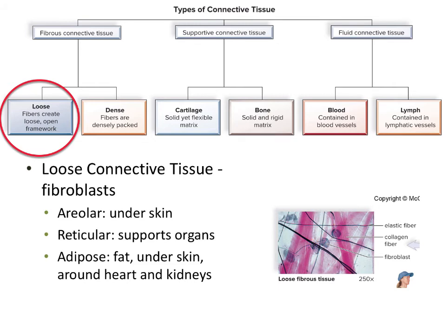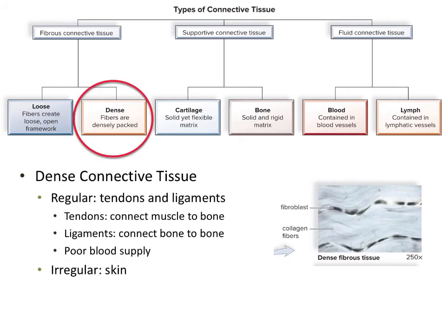In contrast, dense connective tissue does not have a lot of open space. There are a lot of collagen fibers, which gives it a lot of strength but not as much stretchiness or elasticity. You're going to find these in your tendons and ligaments — tendons connect muscles to bones and ligaments connect one bone to another bone. Dense connective tissue is one of the few types that does not have a very good blood supply, so if you ever tear a tendon or a ligament, it takes a long time to heal because there aren't a lot of nutrients and blood coming into these tissues.